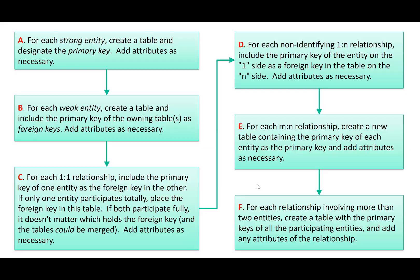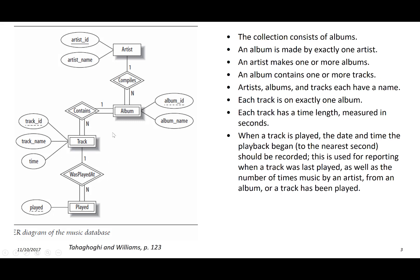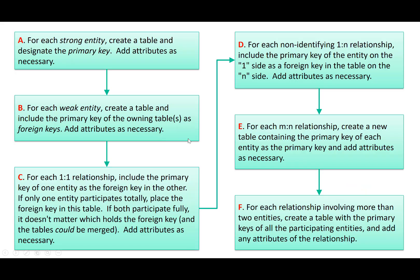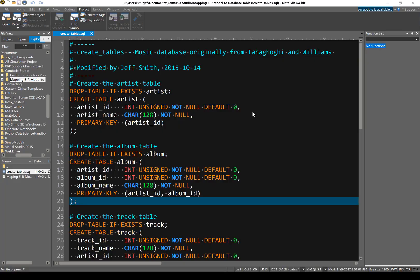In summary, we talked about requirements analysis to conceptual design in class. What we covered in this video module is the conceptual design to logical design, where we took the ER diagram, which is our conceptual design, and followed the six-step process. In our case, we only needed step A and step B because we had strong entities and weak entities. We created the table structure, designated the primary keys and foreign keys, added additional attributes, decided on data types, and then created the MySQL commands to actually create the tables.